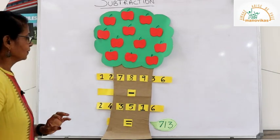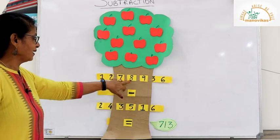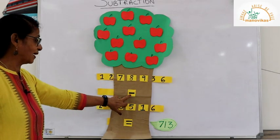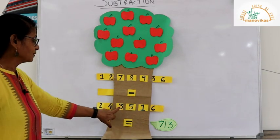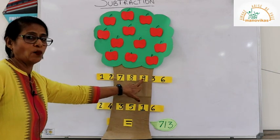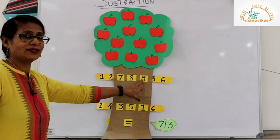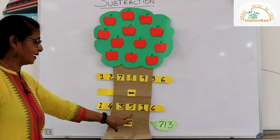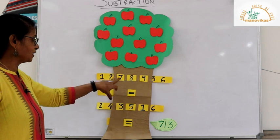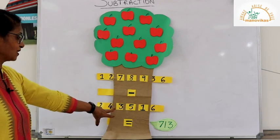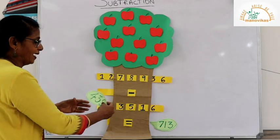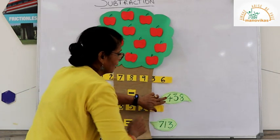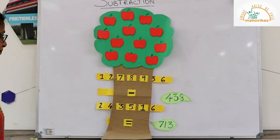Now we have a 3-digit number 789 with a minus sign — we need to subtract 351. In the ones place: 9 minus 1 gives 8. In the tens place: 8 minus 5 gives 3. In the hundreds place: 7 minus 3 gives 4. So the answer for sum number 2 is 438.